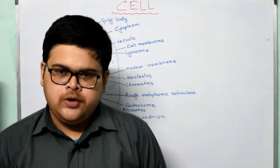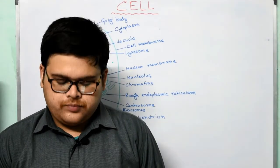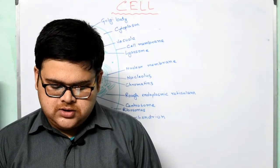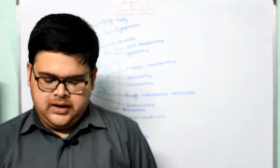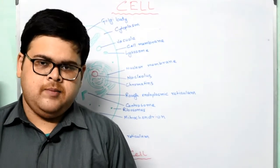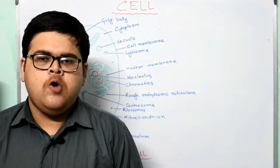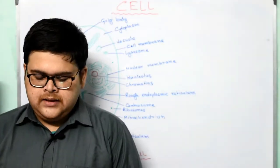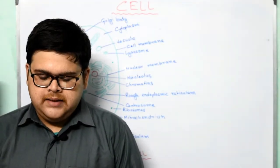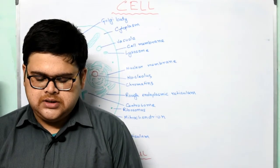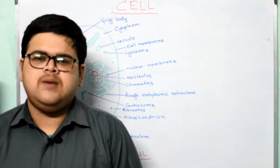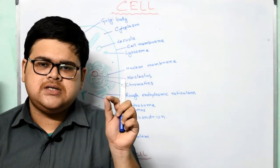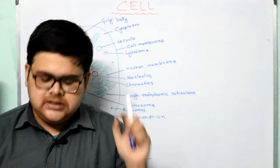Next is mitochondria. These are small rod-like structures surrounded by two membranes — outer and inner. Mitochondria have two membranes: the outer membrane is smooth and the inner membrane is folded into finger-like projections called Cristae.